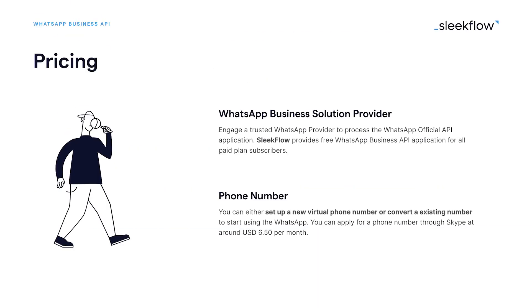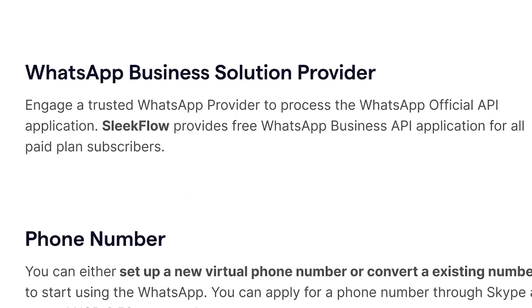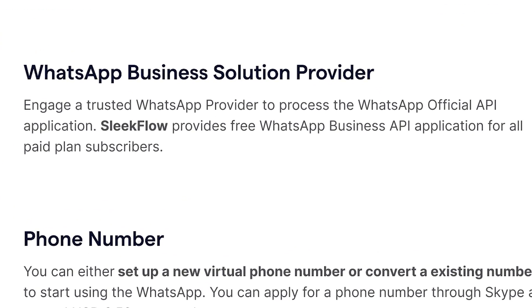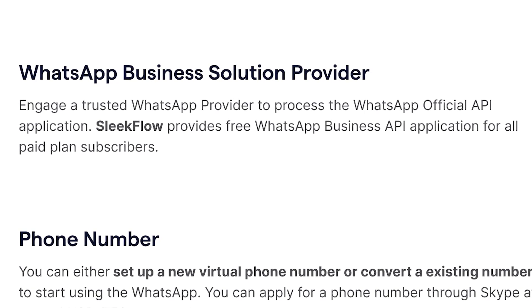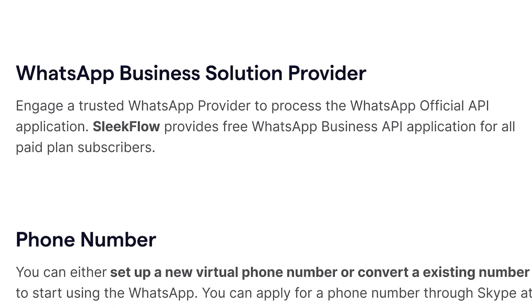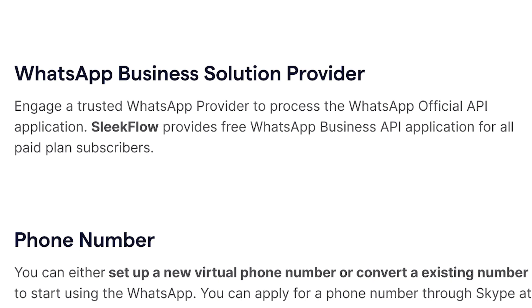Since we've covered the flexible pricing charged by WhatsApp, it's time to talk about the fixed API service provider cost. We strongly recommend that you choose a business solution provider verified by WhatsApp's mother company, Meta. They provide authorized services that stop your businesses from being banned due to spam message reports.